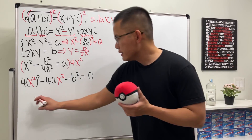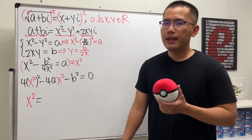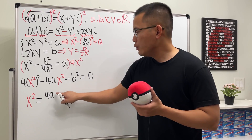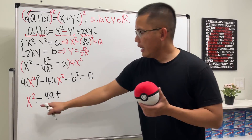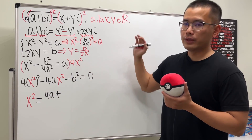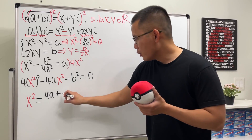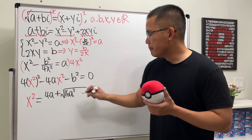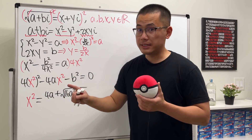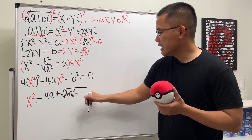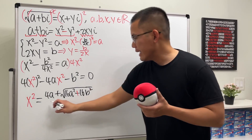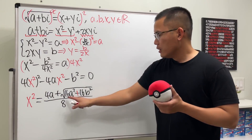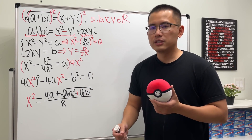Using the quadratic formula with x² as the variable: x² = [4a ± √(16a² + 16b²)] / 8. We take only the positive root since x² must be positive (x is real). Factoring 16 out of the square root brings a factor of 4 outside.